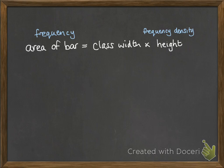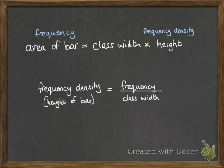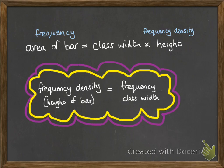And we need to be able to calculate those heights to be able to draw our bars. So to work out the frequency density, if we rearrange what we've got above there, we can do the frequency divided by the class width. And that's our important bit just there.